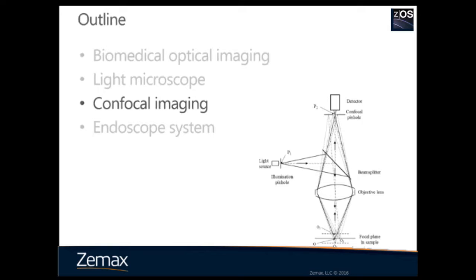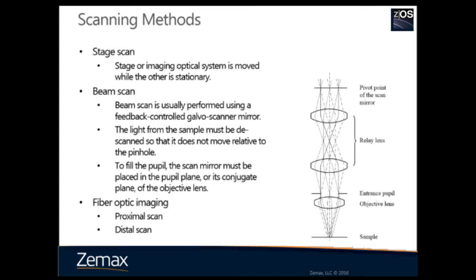The next topic is confocal imaging. Compared to a conventional microscope, the difference is there is a pinhole in front of the detector. This pinhole rejects light from out-of-focus planes. For better performance, a pinhole is also needed in the illumination path, but if you use a laser, that is not necessary. Because there is a pinhole in front of the detector, confocal imaging is a point imaging system. You need a scanning mechanism to create a 2D or 3D image. The simplest scanning method is stage scan. The most commonly used system is a beam scan, using a scanner to scan the focus across the sample. Fiber optic scanning is also an option, especially in endoscopes.